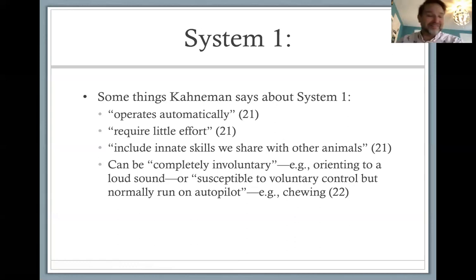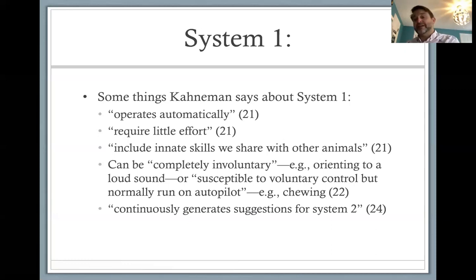Additionally, system one is interrelated with system two in important ways. One thing Kahneman emphasizes is that system one processes are continually generating suggestions for system two. He also says system one has swift and generally appropriate reactions.